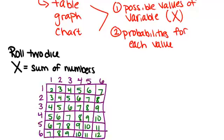Now that we have a table that shows the possible sums, we can make a probability distribution. The two key parts of our probability distribution are a part that shows the possible values for the variable, in this case, that's the possible values for the sum and also the probability for each.